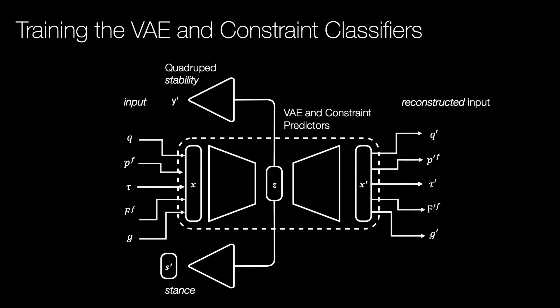We train our model using static snapshots of a robot and generate dynamic trajectories from this. We choose robot quantities that we wish to predict or control as inputs to the model. These are joint angles, foot positions in the base frame, joint torques, contact forces, and the gravity body force.